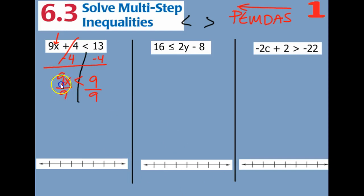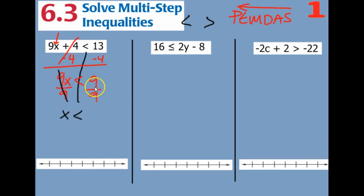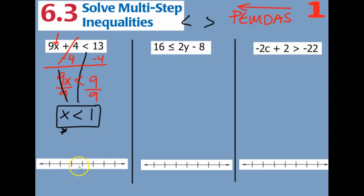Those eliminate — 9 divided by 9 is just 1x, or x. And same here: 9 divided by 9 is just 1. So we can graph this because there's a letter on the left side. I'm going to put a 1 here and just put a number on each side: 0, 1, 2 — just like on our number line.